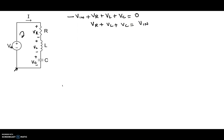VR is by Ohm's Law — voltage across the resistor equals current times resistance. Voltage across the inductor is L·di/dt, and the voltage across the capacitor is what we're interested in, so we'll leave it as VC for now. The right-hand side is Vin. Now, the current going to the capacitor is given as I = C·dVc/dt. So in this expression, if we replace all the I's with C·dVc/dt, let's see what happens.